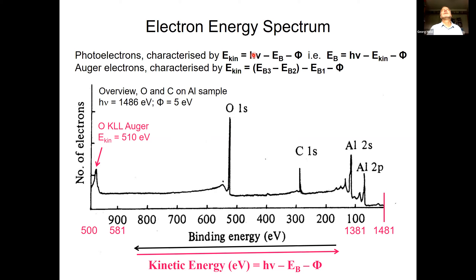Another example where adsorption geometry changes have a marked effect in XPS involves the amino acid serine on a chiral copper surface Cu(531). There are two configurations: when the oxygen atom is detached from the surface there is a clear peak at about 533 eV, but if this oxygen atom makes a bond with the substrate, that peak moves to around 530.5 eV — a shift of more than two electron volts clearly identifying the change in bonding.